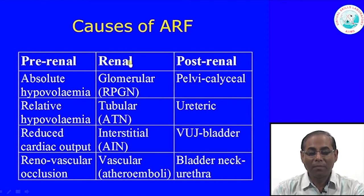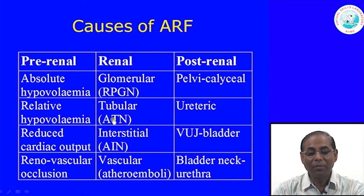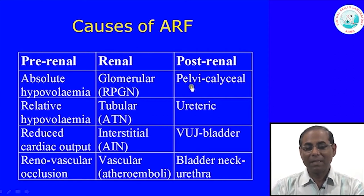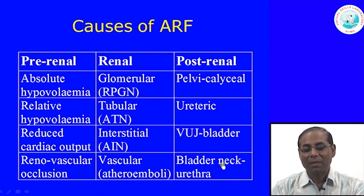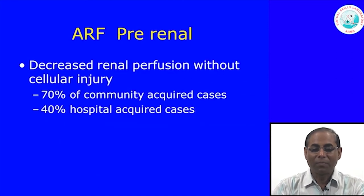This table gives a clearer view. Pre-renal causes include absolute hypovolemia, relative hypovolemia, reduced cardiac output, and renal vascular occlusion. Renal causes may be glomerular, tubular, interstitial, or vascular — the four compartments of the kidney that may get affected. Post-renal causes are anatomically the pelvi-calyceal region obstruction, ureteric obstruction, vesico-ureteric junction or bladder neck obstruction, and urethral obstruction.